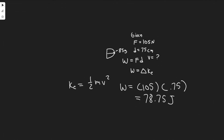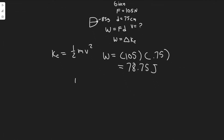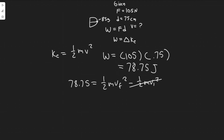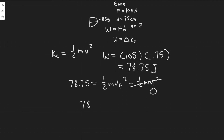Work equals the change in kinetic energy, so we have 78.75 equals one half mv-final squared minus one half mv-initial squared. Keep in mind that initially the arrow starts from rest, so the initial velocity is zero. That means the initial kinetic energy term becomes zero, and we're left with 78.75 equals one half mv squared.